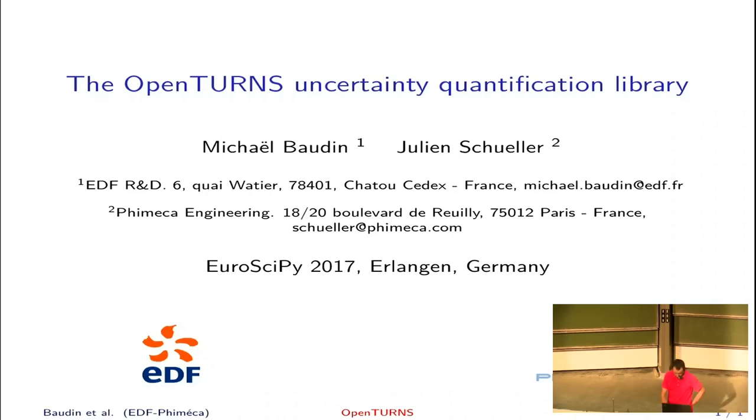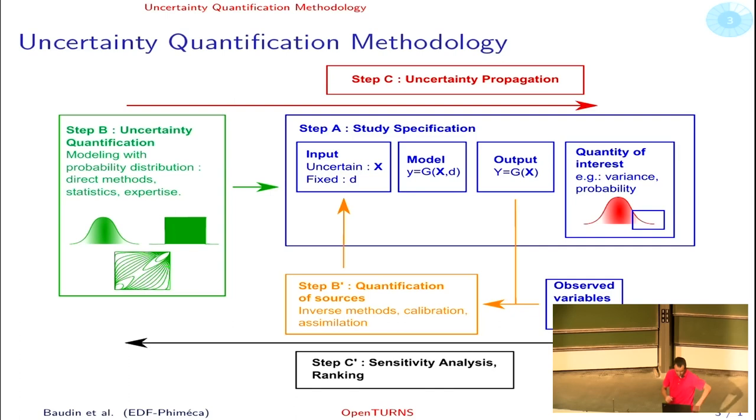First, a bit of methodology. This is a short reminder of the uncertainty quantification methodology we use in OpenTURNS. There are three main steps. The first step, Step A, is study specification. The most important part is the definition of the model. In simplest cases it's a symbolic function, but in real applications it can be a computer code such as a finite element or CFD computer code. Once you have the G function...